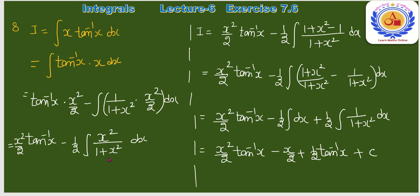∫x²/(1+x²)dx को simplify करने के लिए: numerator में 1 add और subtract करते हैं। x²/(1+x²) = (1+x²)/(1+x²) − 1/(1+x²) = 1 − 1/(1+x²)।